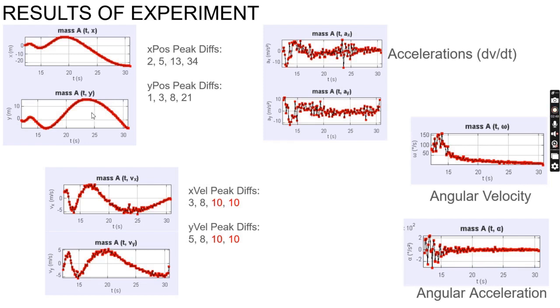For y: first peak is negative 1, that's a peak difference of 1, next goes 3 difference, next is 8 difference, next is 21 difference. These are the missing values from the Fibonacci sequence in the x graph. It goes 1, 2, 3, 5, 8, 13, 21, and 34.